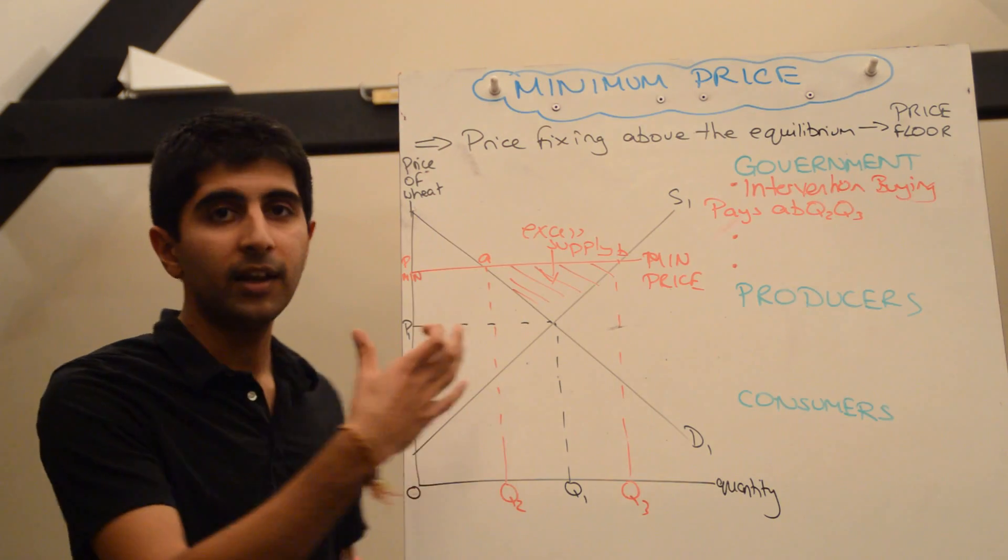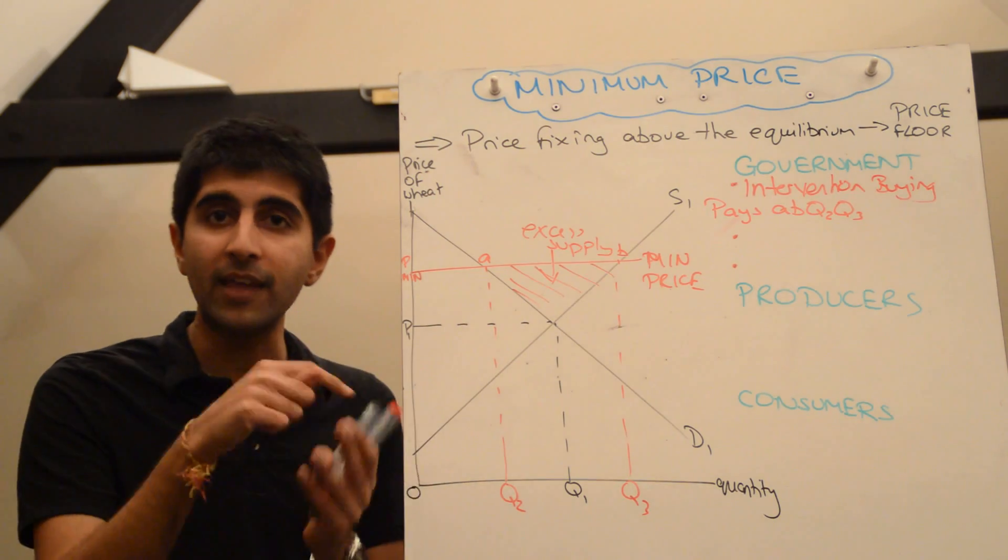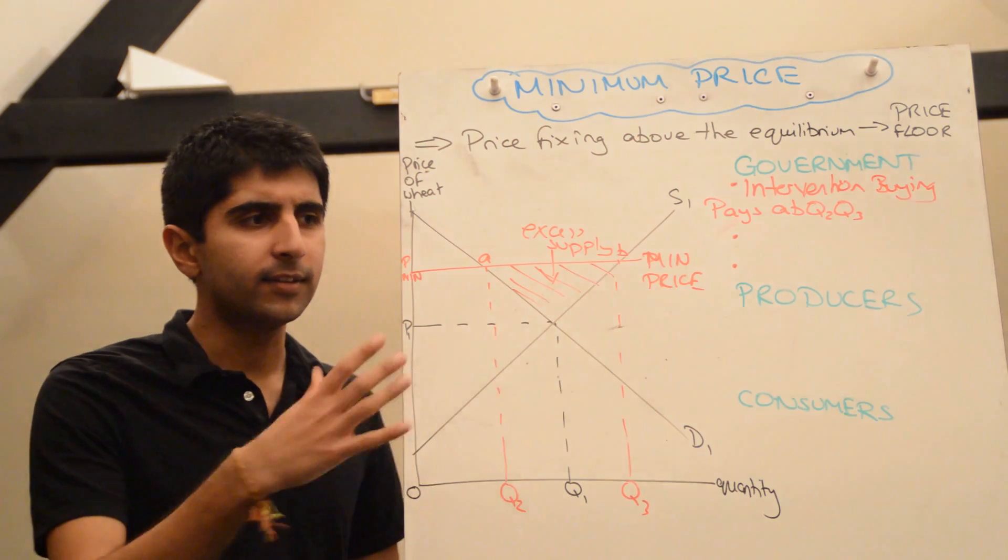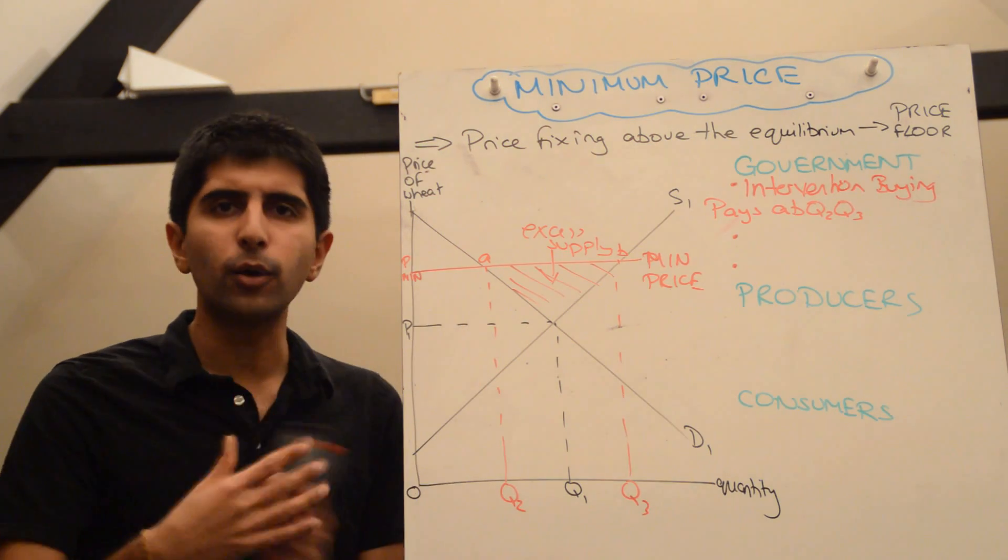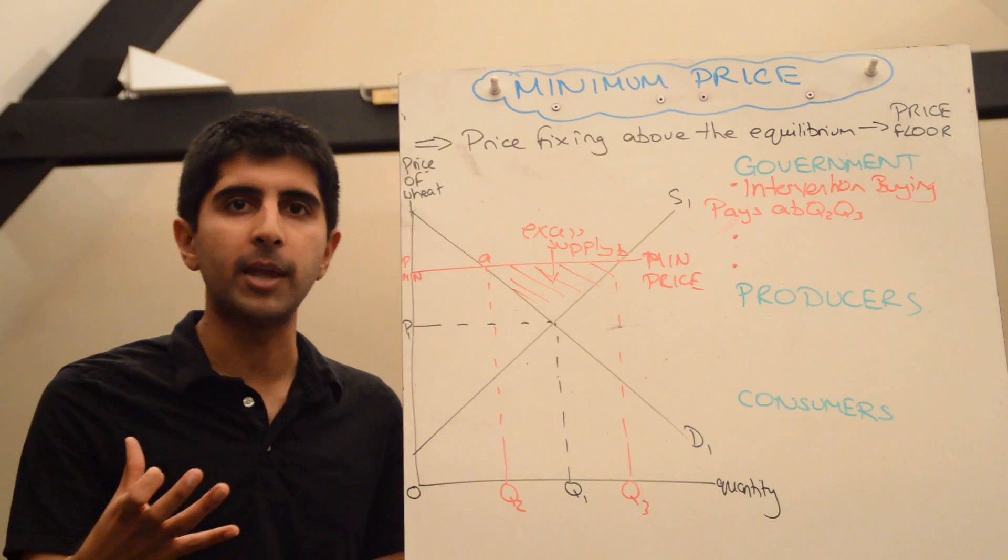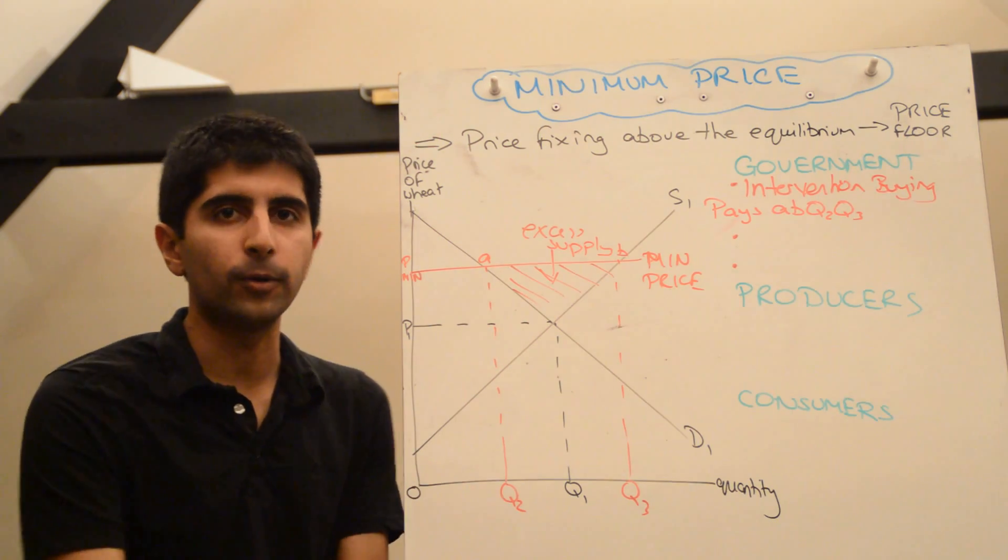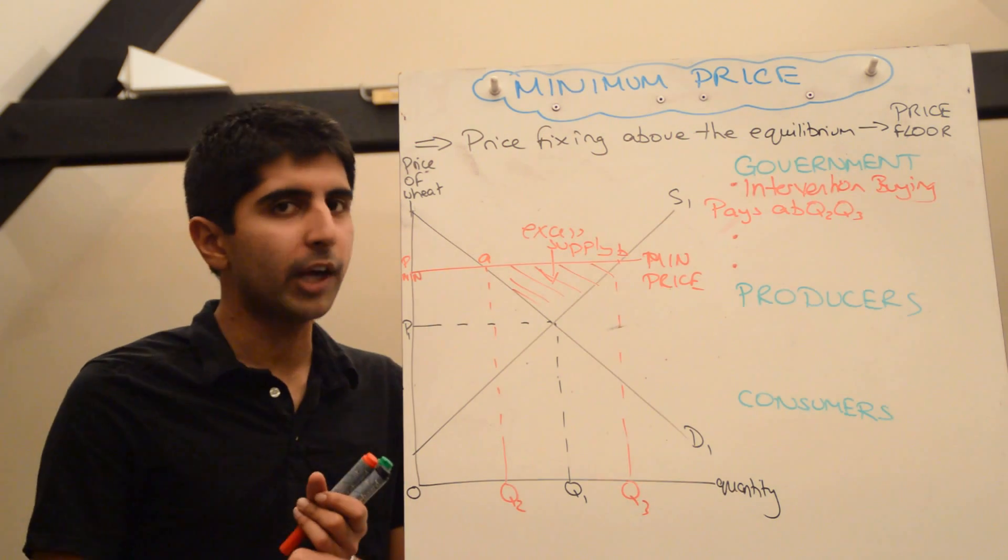They'll realize that the price they're charging is less than the minimum price in the home country, and they'll be very unhappy with it. Because it means that domestic wheat suppliers abroad will not be able to compete, and it can cause all sorts of negative effects in the economy where the wheat is trying to be sold. So often the governments will not get away with dumping it either.